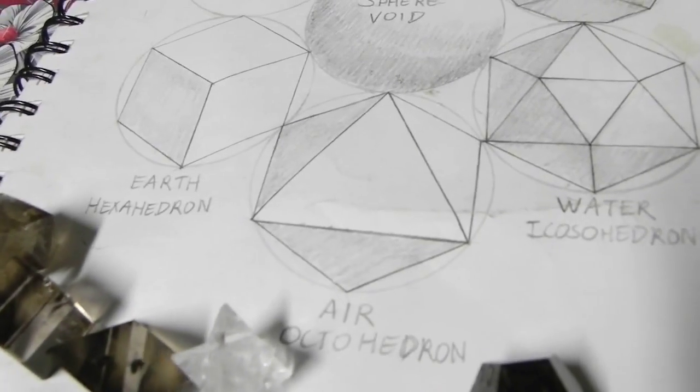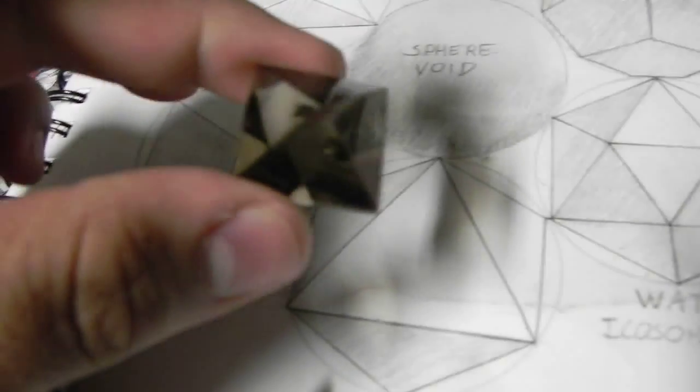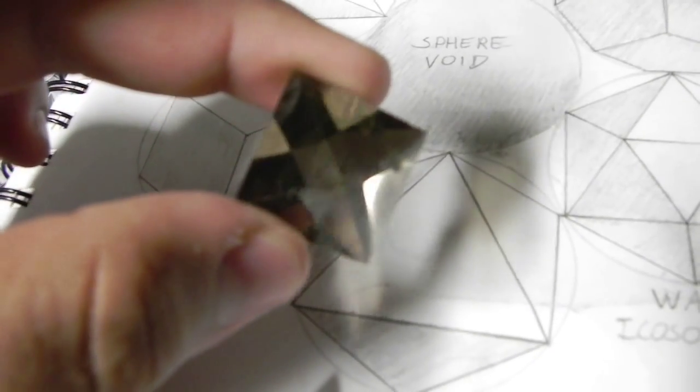The next one I'm going to talk about is the octahedron, which is air. And yes, this represents gases or air.